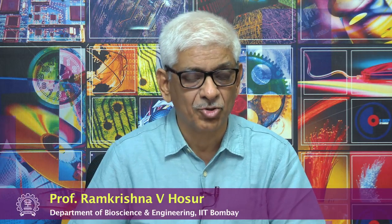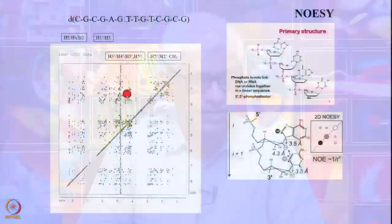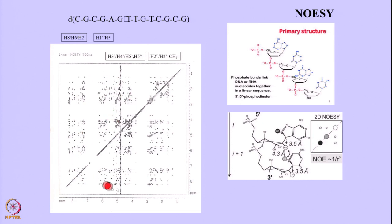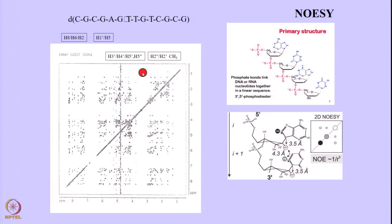We will do a recap of the assignment process for nucleic acids. We do this by the NOESY experiment, which we discussed last time. This is a two-dimensional NOESY spectrum of a particular oligonucleotide whose sequence is given at the top. It has three thymines, characterized by the presence of the methyl groups in the base, which are distinctly seen and fix the positions of the thymine residues.